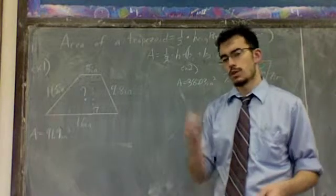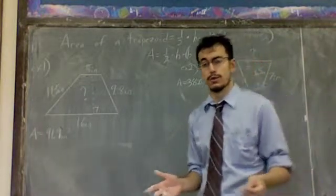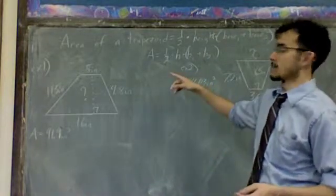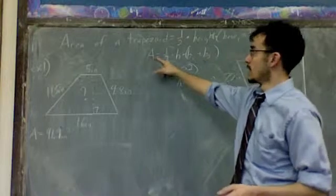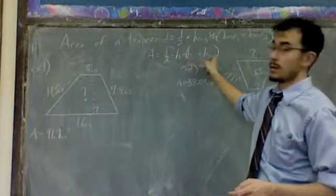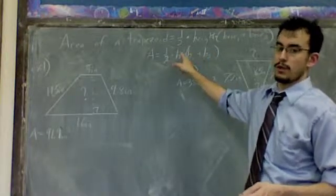There's basically two types of problems, one where you're missing the height and one where you're missing one of the bases. Those are really the only two different ways to do it. So, just to reiterate, the area formula for a trapezoid is area equals one-half times the height of the trapezoid times the sum of the bases, base one plus base two. You have to add them up first, and then you can multiply by the height or the half.